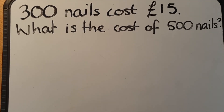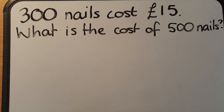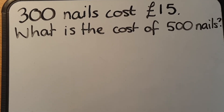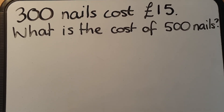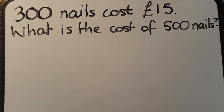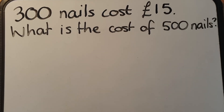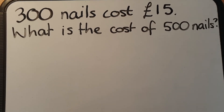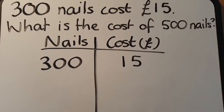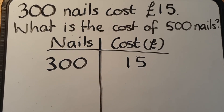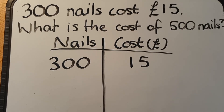Here's an example where it's maybe not the best to find the cost of one item. You're told that three hundred nails cost fifteen pounds and you're trying to find the cost of five hundred nails. The easiest thing to do would be to find the cost of just one hundred nails, as that gives really easy divisions and multiplications rather than dividing by three hundred and multiplying back by five hundred — especially if you don't have a calculator. I'm going to start by drawing a table. The table has nails on the left and cost on the right, and what we're trying to find should always be on the right-hand side.